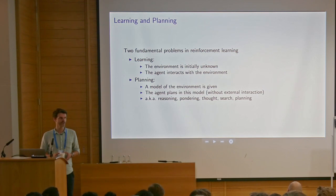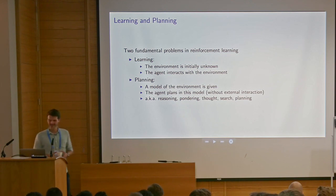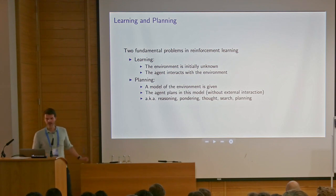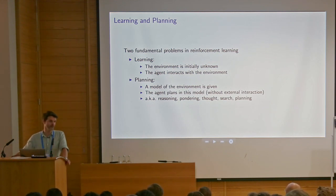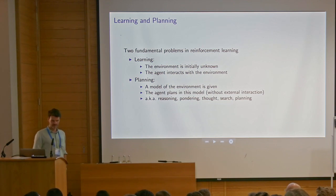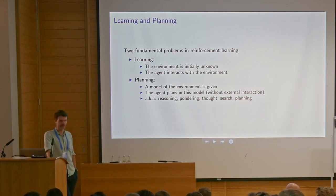If you ask many people to define, say, planning for you, they might give you quite different answers. So one distinction you could make is that for learning the environment is initially unknown and the agent then interacts with the environment in order to learn, whereas for planning a model of the environment is given and then the agent plans in this model without external interaction. This is sometimes also called reasoning, pondering, thoughts, search, or planning depending on who you ask.